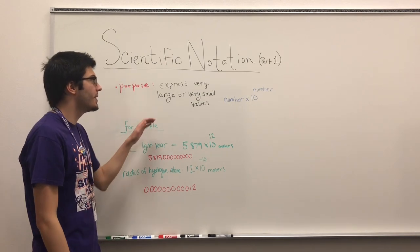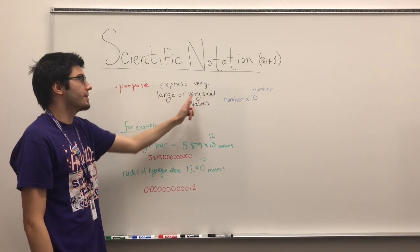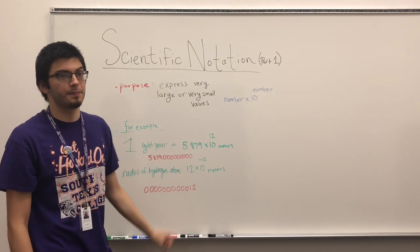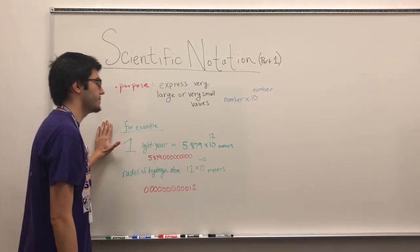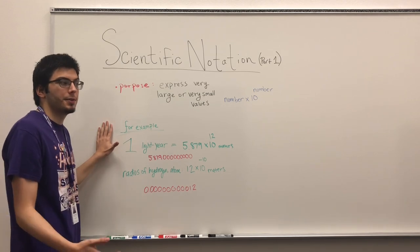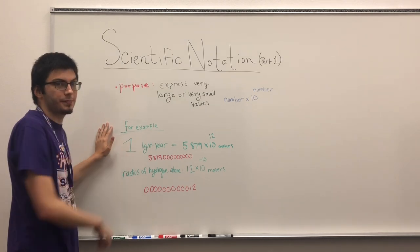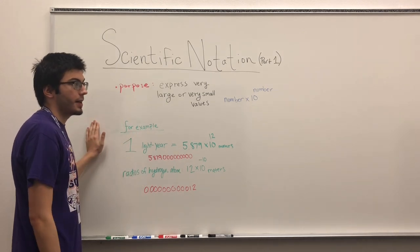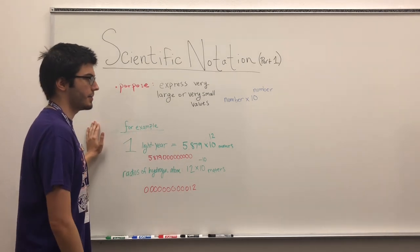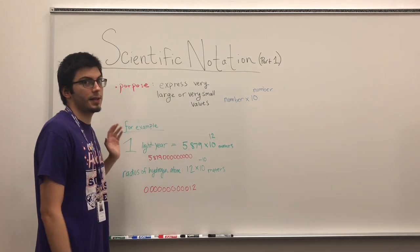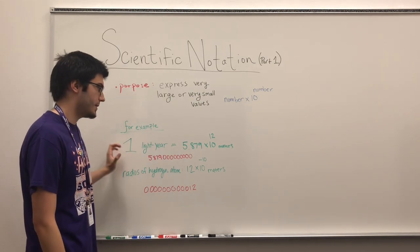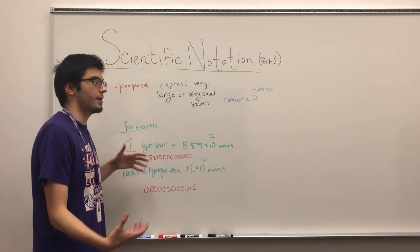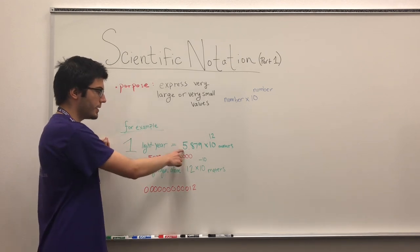The purpose of scientific notation is to express very large or very small values. For example, when you search up what is a light year, it's the distance that light travels. Light travels very fast, so we have to use scientific notation to describe a light year because the distance is a very large value.